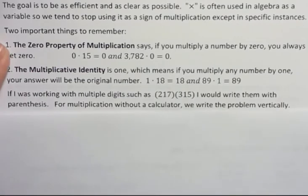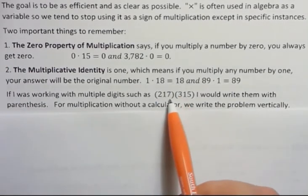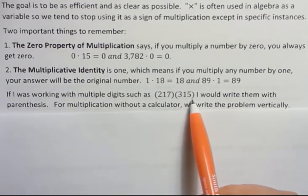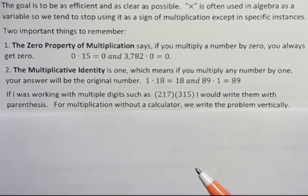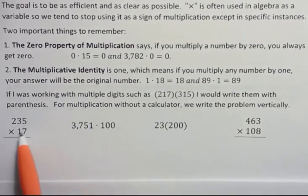If I had a very long number working with multiple digits, such as 217 times 315, I would probably write them in parentheses rather than just a dot in the middle, because it's easy to get lost when you have a lot of numbers. So it's okay to write them that way too. And for multiplication without a calculator, we usually do that by writing them vertically, like we can see here.